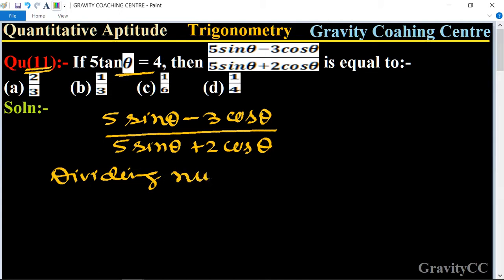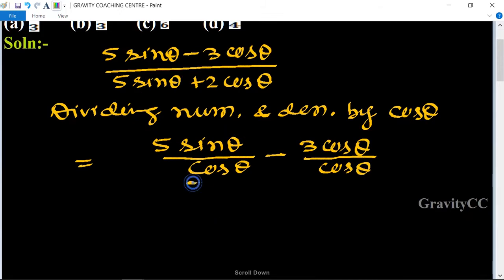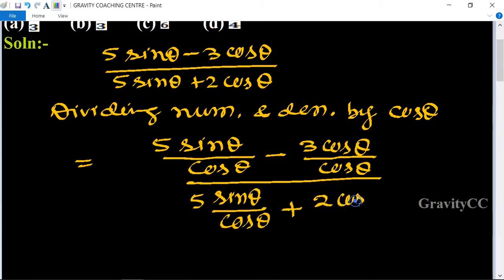Dividing numerator and denominator by cos θ, so we get (5 sin θ / cos θ - 3 cos θ / cos θ) / (5 sin θ / cos θ + 2 cos θ / cos θ). So here cos θ, cos θ cancel.